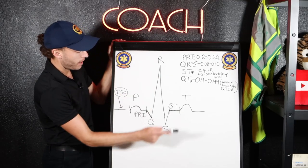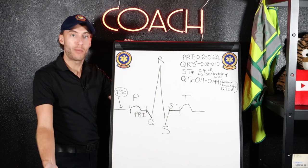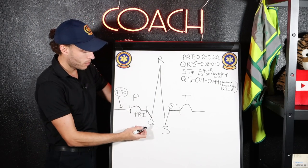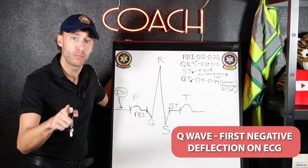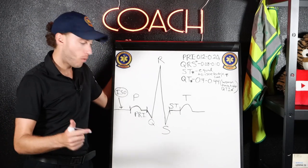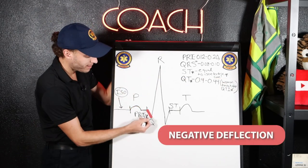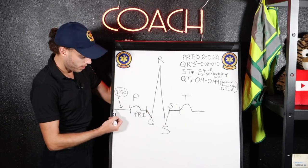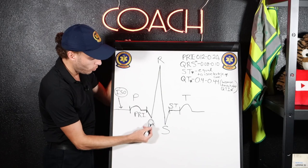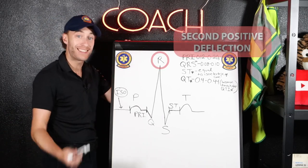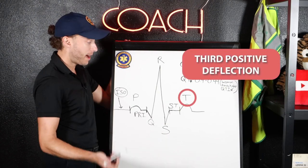Now we have the QRS. The Q wave is the first negative deflection on the EKG. A wave that points up is a positive deflection; a wave that points down is a negative deflection. The P wave is the first positive deflection. The Q wave is the first negative deflection. The R is the second positive deflection. The S is the second negative deflection. And the T is the third positive deflection.